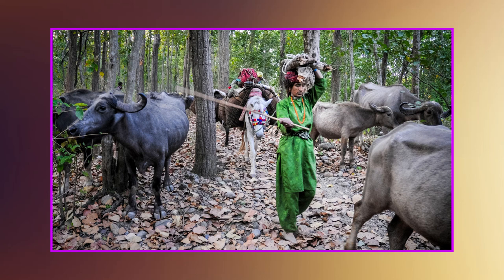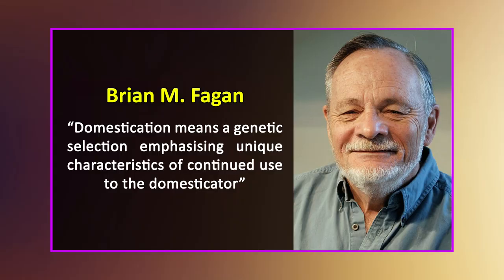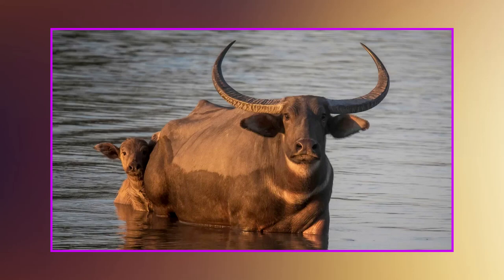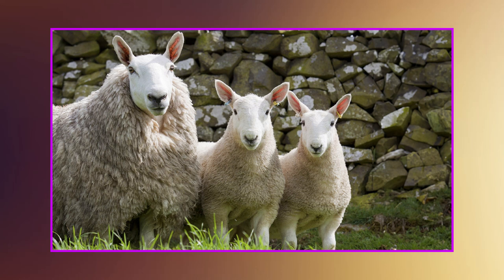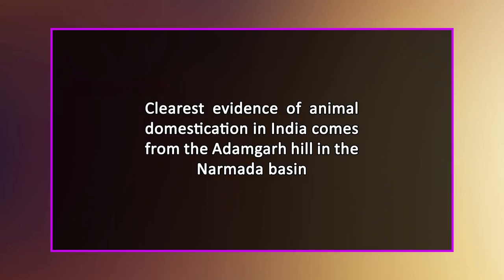Similarly, Gujar communities in the drier Aravalli and Saurashtra hill forests lop trees and shrubs for mixed cattle and buffalo herds. According to Brian M. Fagan, the commencement of the practice of domestication had a far-reaching impact from an eco-environmental perspective. Domestication means a genetic selection emphasizing unique characteristics of continued use to the domesticator — wild sheep have no wool, wild cows only provide milk for their offspring, and wild chickens do not lay extra eggs. Isolating wild populations for selective breeding under human supervision could result in changes in wool bearing, lactation, or egg production.